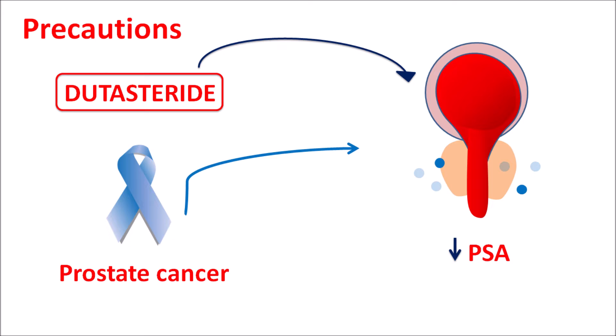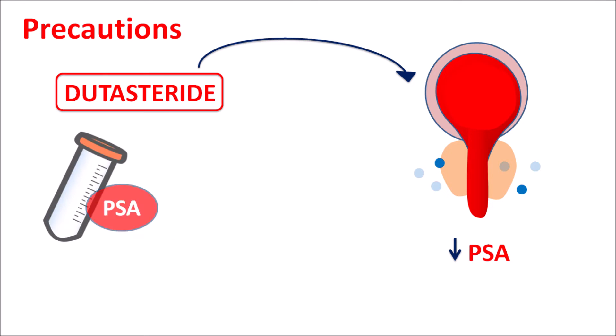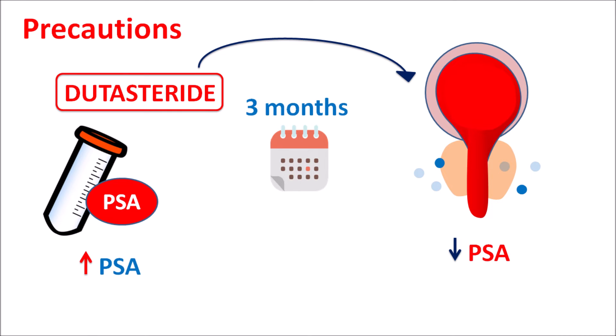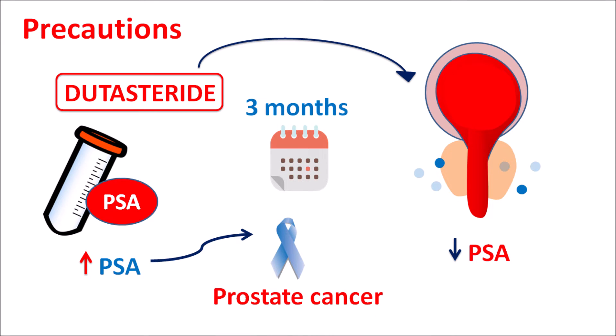This can mask the condition of prostate cancer. That is why a PSA test should be done during treatment with dutasteride. Since this treatment is extended up to three months, PSA levels should be regularly checked, as any elevation may indicate that the patient may have prostate cancer.